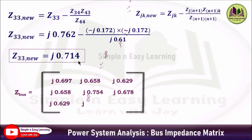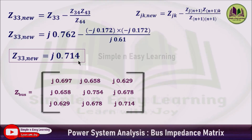Substituting into matrix format, these nine parameters form the final Z-bus matrix, considering all reactances in the given diagram. This is how you solve this problem to calculate the bus impedance matrix using the bus building algorithm method.